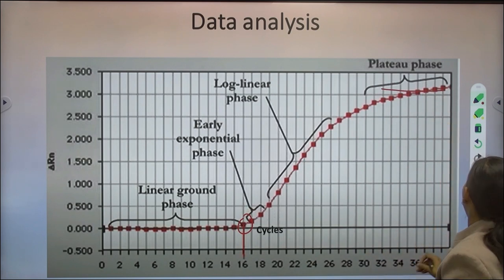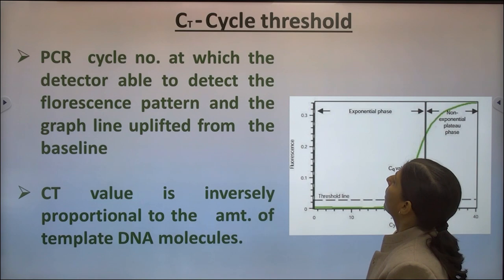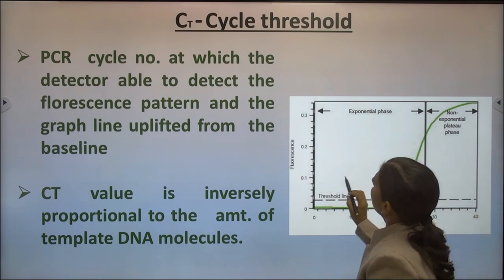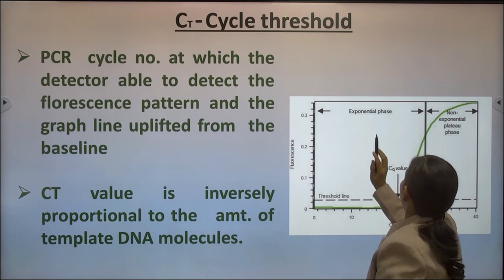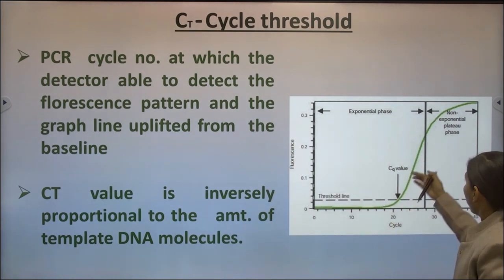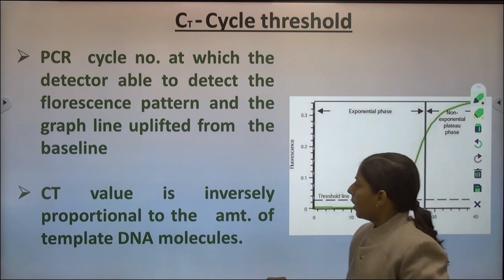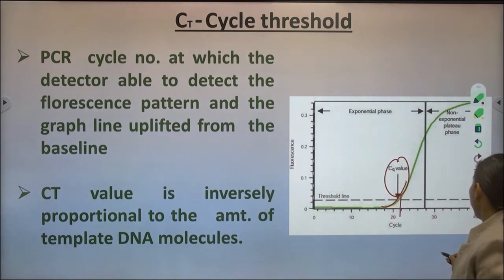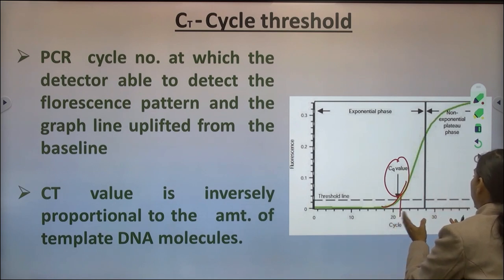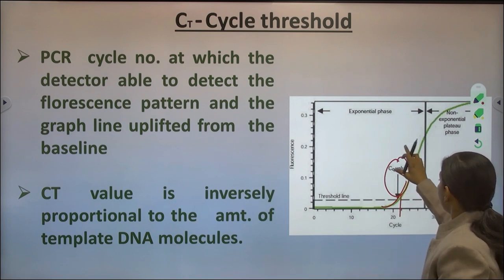The plateau phase, where the reaction is not supported by certain components, generally occurs during cycles 28 to 40. The critical threshold, also known as CQ or CT value, is the cycle at which the detectable signal is achieved — coming under the exponential phase. It is the PCR cycle at which the detector is able to detect the fluorescent pattern and the graph line uplifts from the baseline. The CT value is inversely proportional to the amount of template: if the template is large, CT comes earlier; if small, CT comes late.